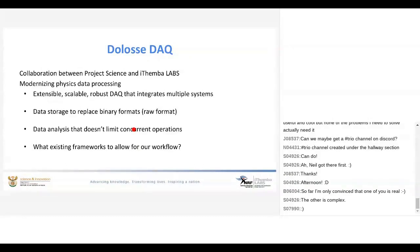What is the DOLOSE DAQ? The DOLOSE DAQ is basically a collaboration between Project Science and Ithemba Labs. The main reason for developing DOLOSE is to modernize the way we process physics data, because in a lot of facilities there is still software written years ago by postdocs and students that is being modified for new experiments. The DOLOSE DAQ we are developing needs to be extensible, scalable, and a robust stack that should be able to integrate multiple front-end systems. We are going to replace the way we store data — currently we store it in raw format — and our data analysis should not limit concurrent operations.